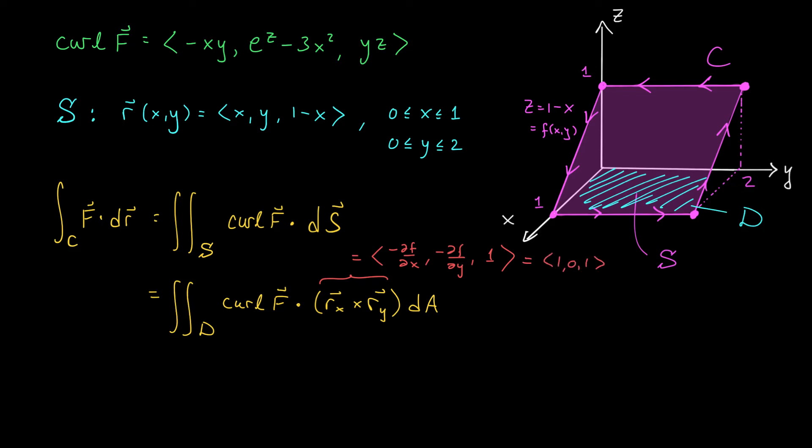Now before moving forward, we should make sure that this normal vector is consistent with the orientation given to us by C. C is oriented counterclockwise. And if you imagine turning the lid of a Sprite bottle counterclockwise while you're removing the lid, the lid is going to come up or away from the bottle. So we're looking for upward orientation. Is that what we have? Yes, it is. You can see that we have a positive z coordinate, so this is the correct cross product.